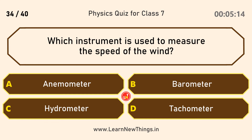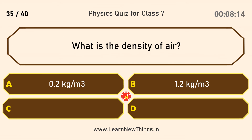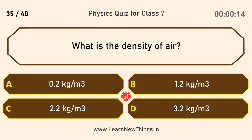Which instrument measures the speed of the wind? Anemometer. What is the density of air? 1.2 kilograms per meter cube.